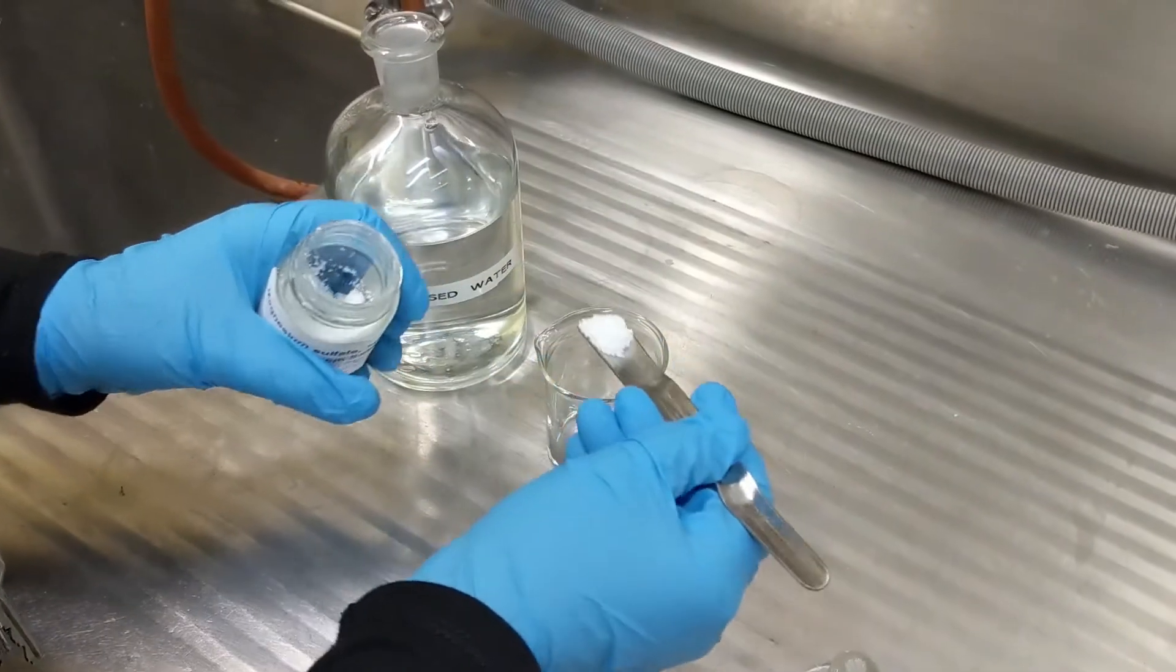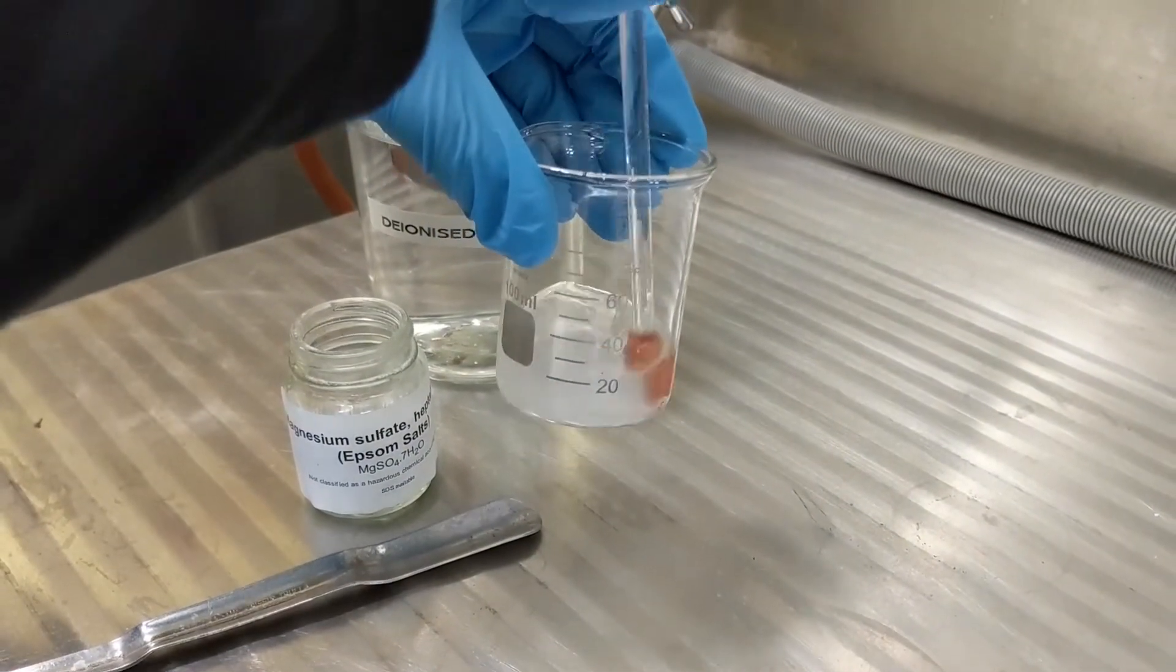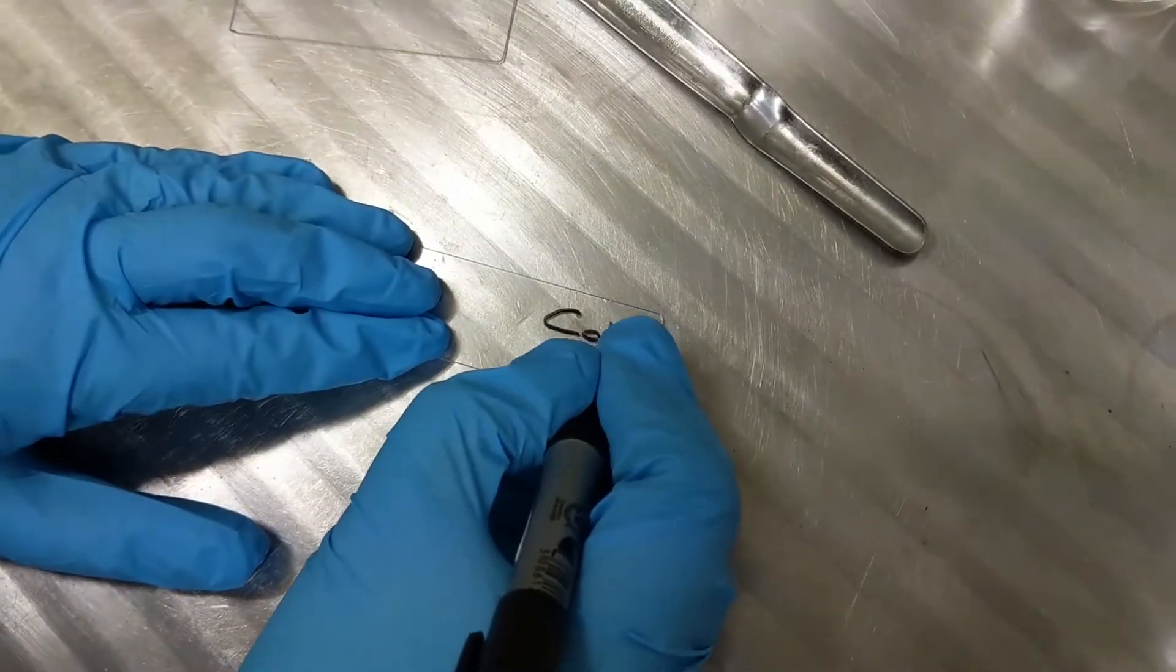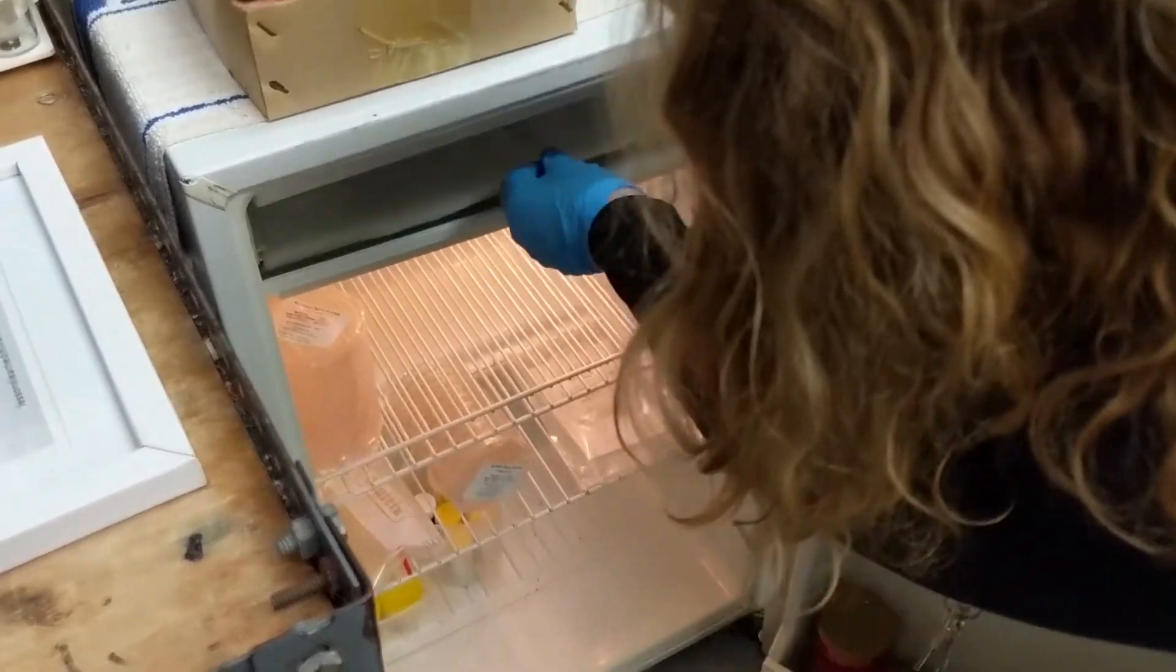We started by making a solution of magnesium sulfate by adding the solid Epsom salts to water, and then we labeled the slides with cold and room temperature. The cold slide went in the freezer.